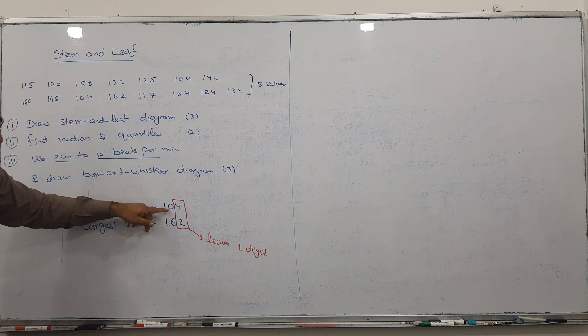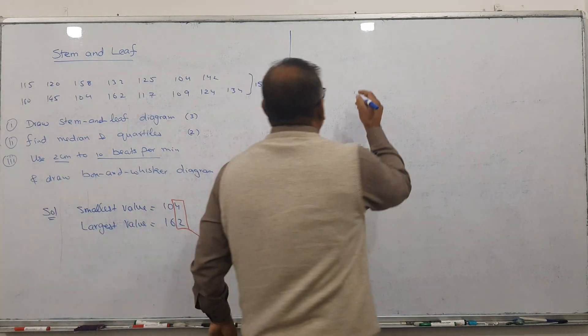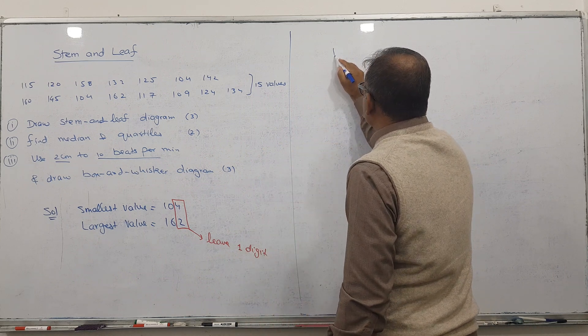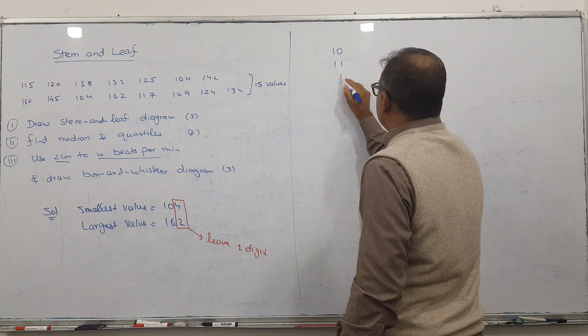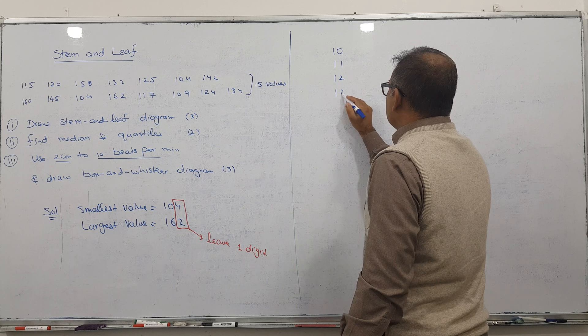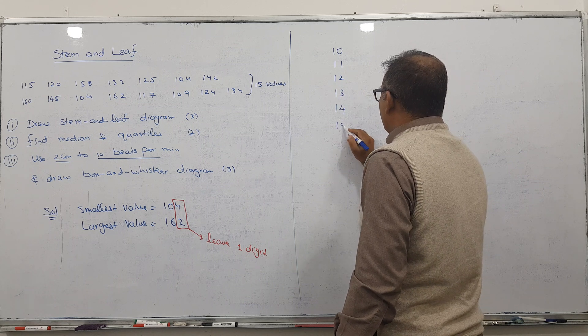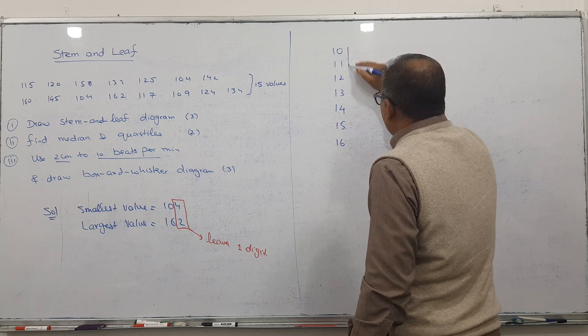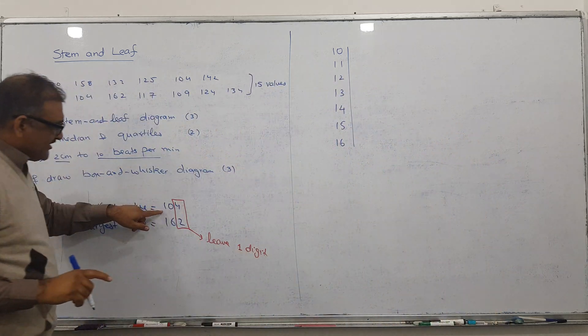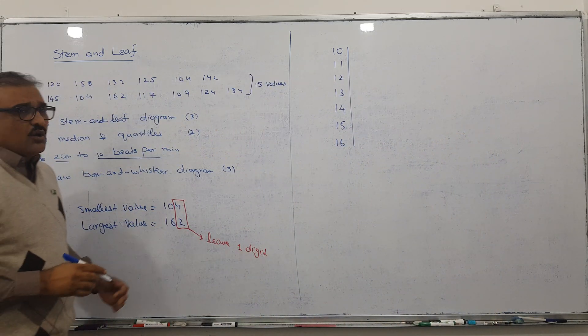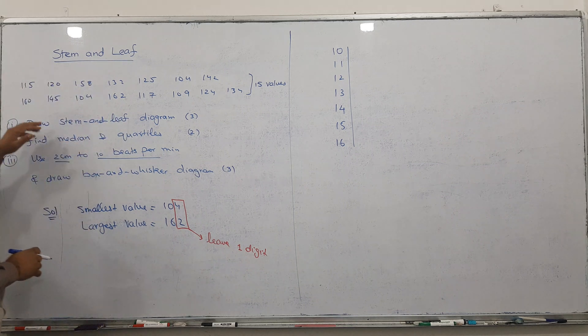After leaving one digit from the right-hand side, what's left? 10, 16. I will write here: 10, then 11, then 12, then 13, then 14, then 15, till 16. Make a line. This is the starting point 10, ending at 16. Always the same pattern.